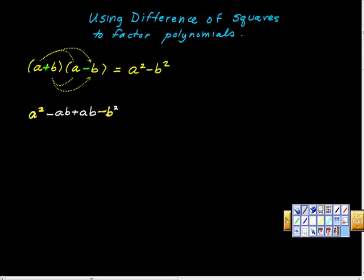So look what happens here. This a squared is this a squared, and this negative b squared is this one. And if you look carefully in the middle, negative ab plus ab cancels out. So there's our proof of that. This is a pattern you're supposed to recognize. It will really help you.